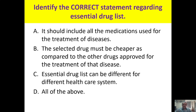The first question: identify the correct statement regarding the essential drug list. It should include all medications used for the treatment of diseases — no, it contains only selected medications and not for all diseases, but for priority diseases.